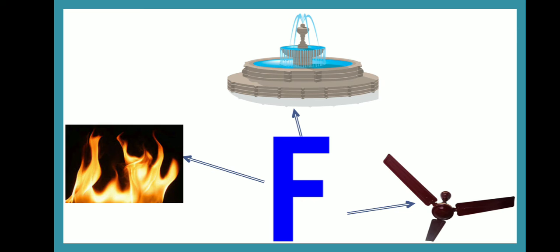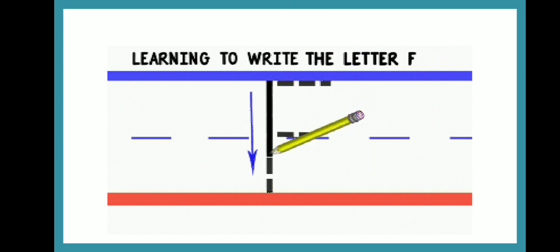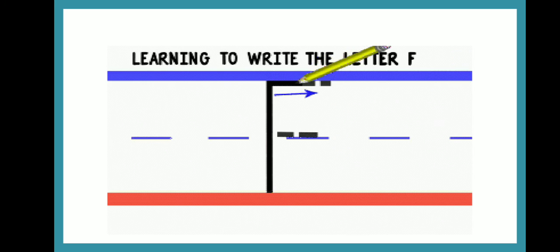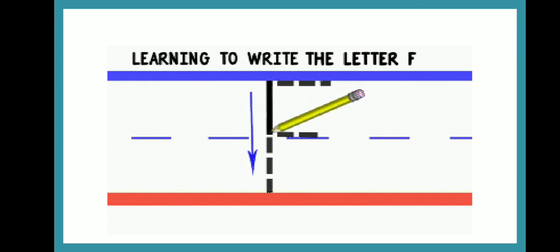Now I am going to tell you how to write letter F. So kids, first you have to trace a standing line like this. Then you will trace a sleeping line like this. Now come to the middle, you will trace a sleeping line like this. So kids, in this way we will write letter F.